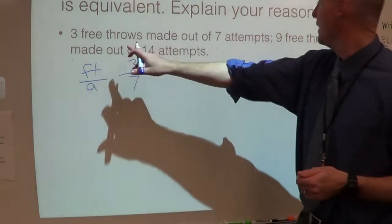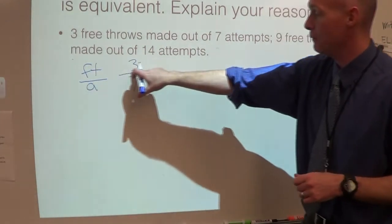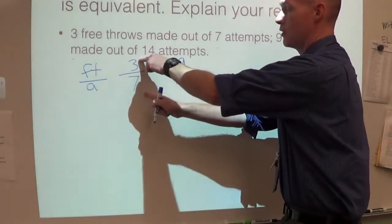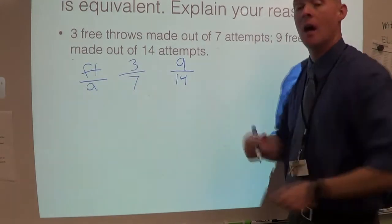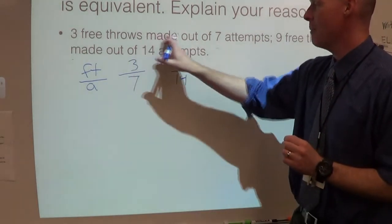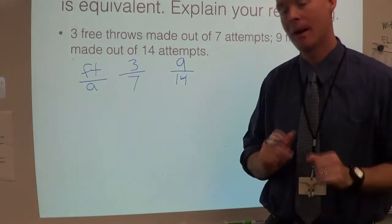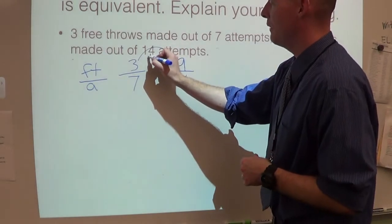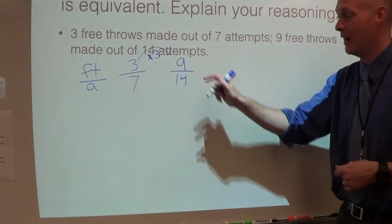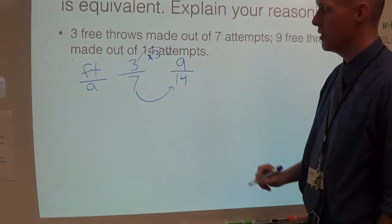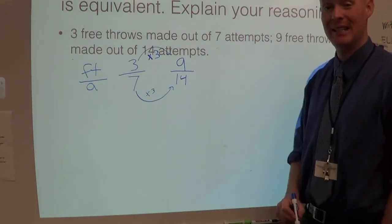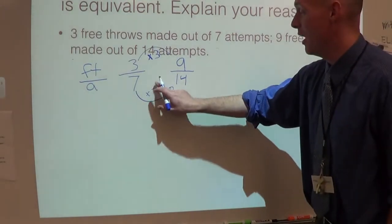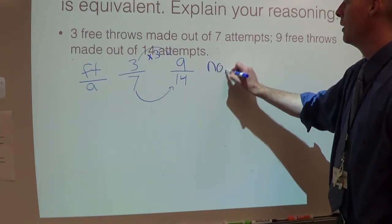So here I have three to seven. Then I have nine free throws made out of 14 attempts — nine on top and 14 on the bottom. So I have my two ratios: three to seven and nine to 14. What I have to do is see if I can do the same operations to get both the numerator and the denominator. How do I go from three to nine? We're going up, so we know we have to multiply — times three. That works to get from there to there. But what we do to the top, we have to do to the bottom. So does seven times three equal 14? No, it does not. So therefore, are these equivalent? The answer is no.